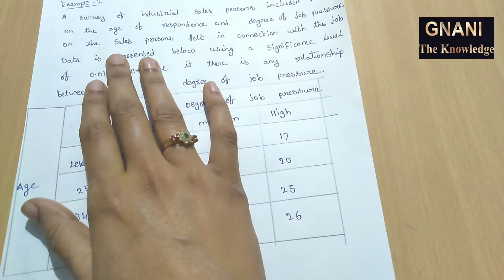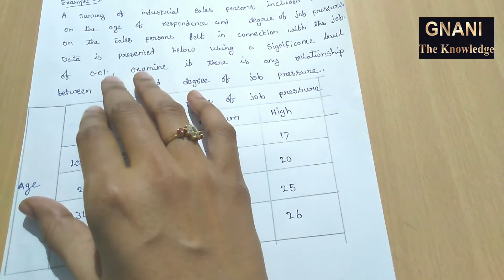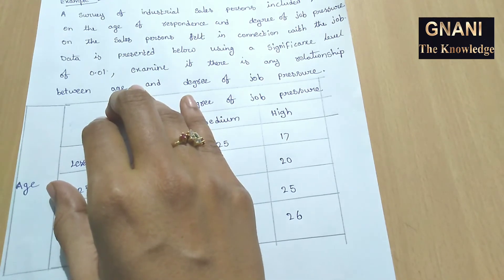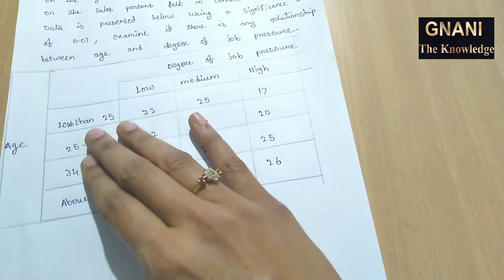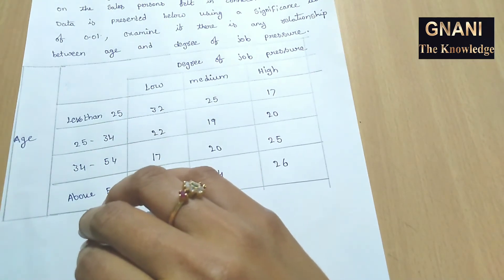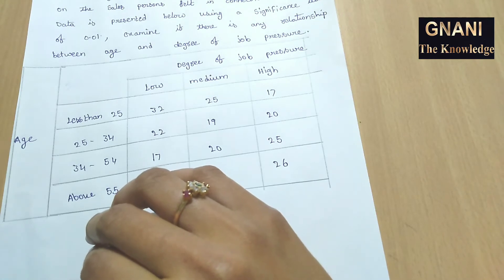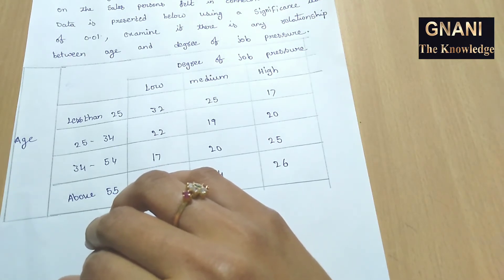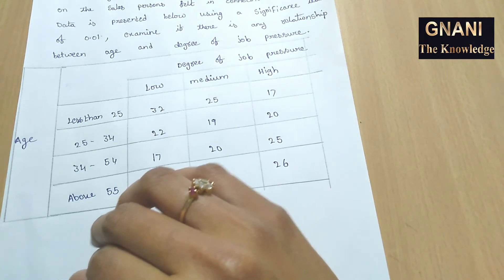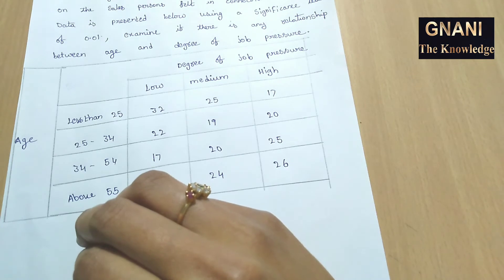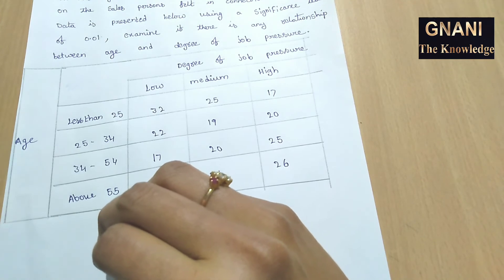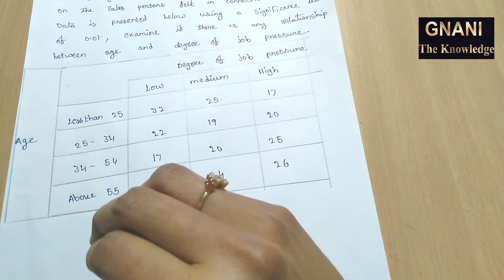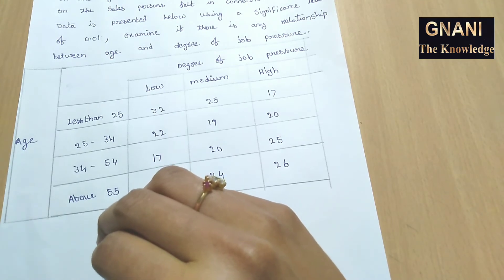After finding the table value, you have to compare both the calculated value and the table value. If the calculated value is less than the table value, we accept the null hypothesis — meaning there is no relationship between age and job pressure. If the calculated value is greater than the table value, we accept the alternative hypothesis — meaning there is a relationship between age and job pressure.